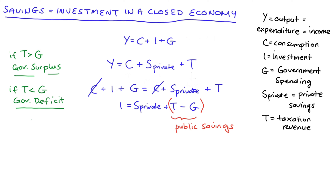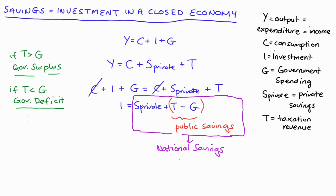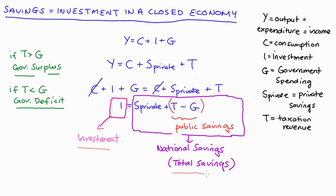So we have private savings and public savings on the right hand side, and we should recognise that the total savings in an economy is just equal to the sum of private and public savings — it's sometimes called national savings. On the left hand side we have I, that's investment. So investment is equal to savings in a closed economy. And that's it for this video. I hope that it helped. Thank you so much for watching. Hope you guys are having a good one.